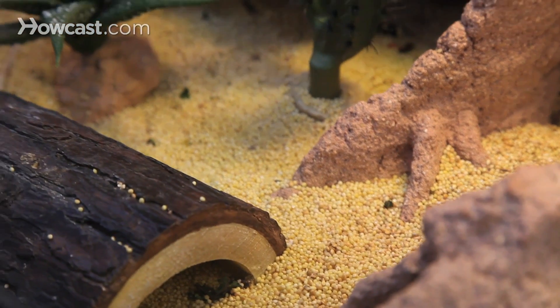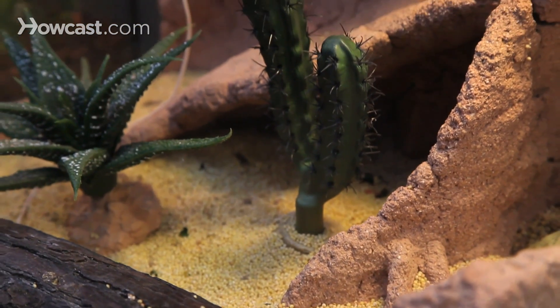The other thing to begin setting up the enclosure is picking a substrate. Substrate is just the material you put at the bottom of the enclosure. A desert turtle or tortoise might be living on a sandy or dirty or even rocky base, and you can try and mimic that in your enclosure.